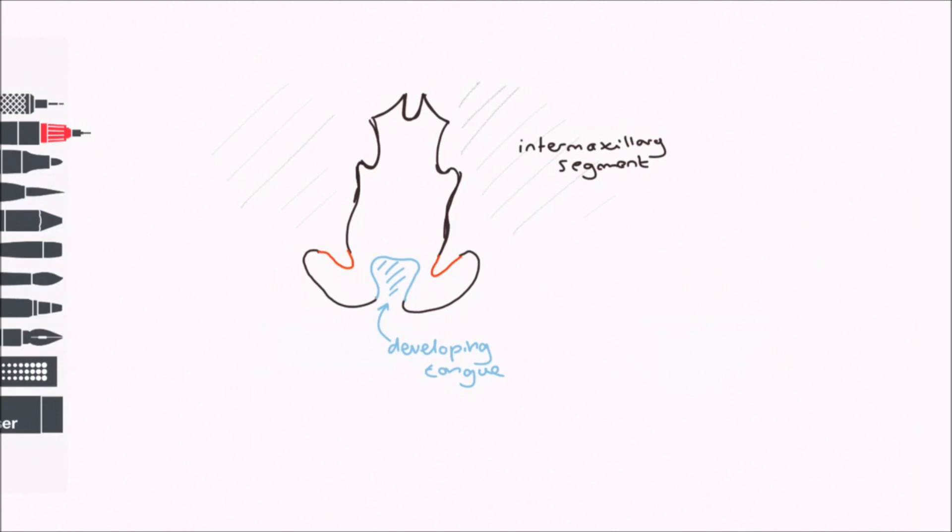The palate forms from the primary palate and the secondary palate. The primary palate is comprised of the intermaxillary segment, which is what was formed by the fusion of the medial nasal prominences.